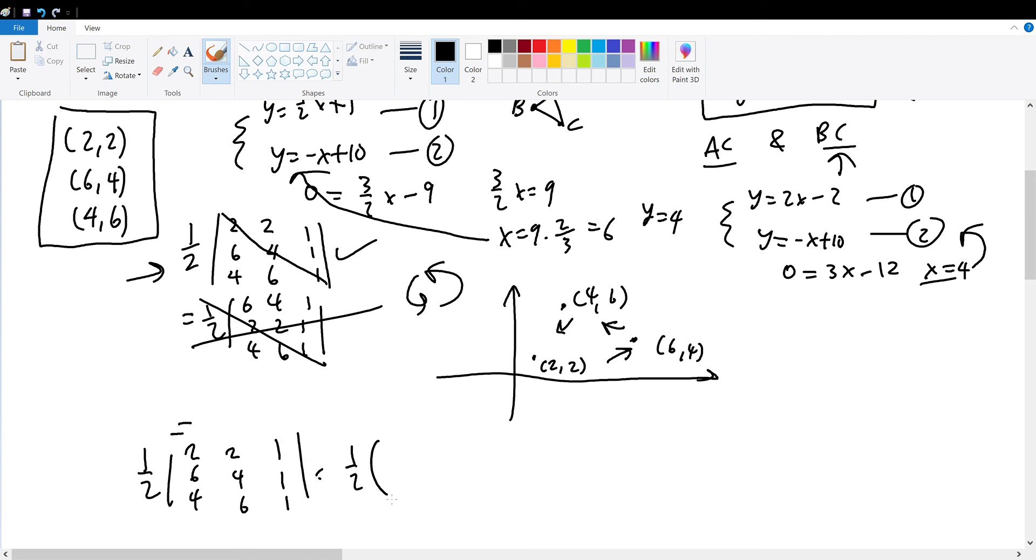It will be 1/2 times, so this column, plus 6 times 6 plus 1, which is 36, plus 2 times 1 plus 4, which is 8, minus 1 times 4 times 4, which is 16, minus 1 times 6 times 2, which is 12, minus 2 times 6 times 1, which is 12. So simplifying this, we get our answer.